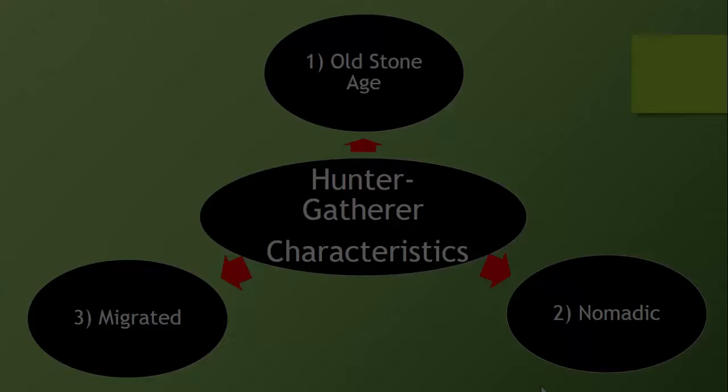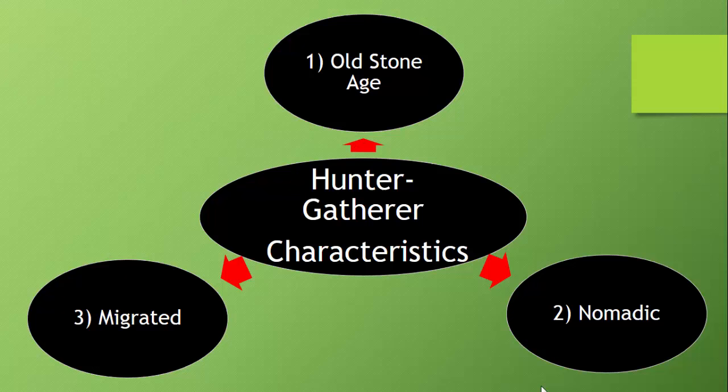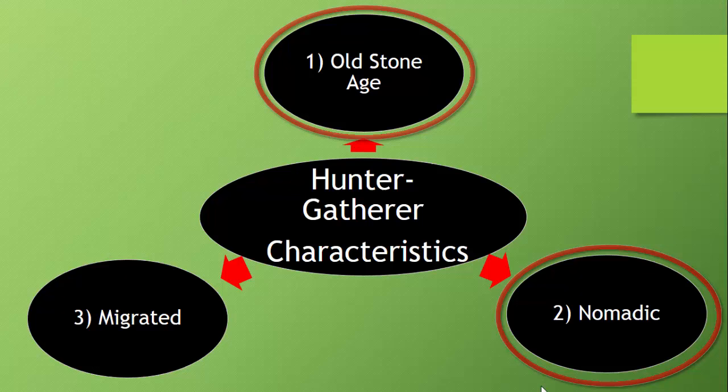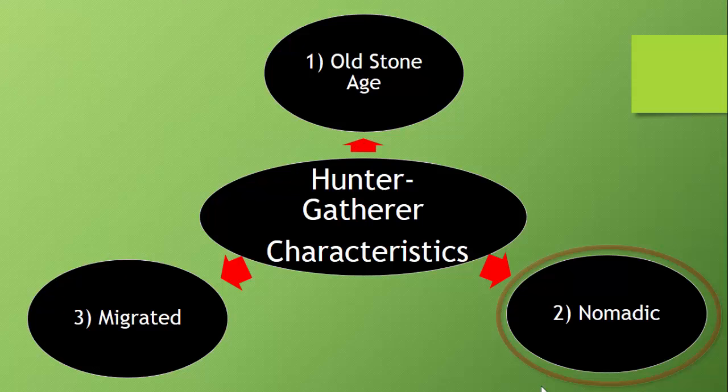So what are some characteristics — some things you would use to describe hunter-gatherers? Well, bubble number one: they lived during the Old Stone Age. This was a time period until about 10,000 years ago where people used stone tools. Bubble number two: they were nomadic people, which means they migrated or moved according to the seasons from place to place in search of food and water. They did not live in one place like us.